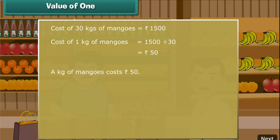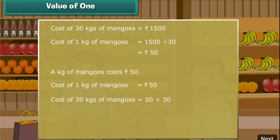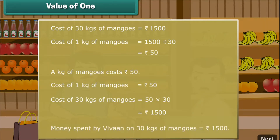Let us verify our division. Cost of 1 kg of mangoes is equal to 50 rupees. Cost of 30 kg of mangoes is equal to 50 multiplied by 30, which is equal to 1,500 rupees. As per the question, Vivan spends 1,500 rupees on 30 kg of mangoes. So, we verify that our division operation is correct.